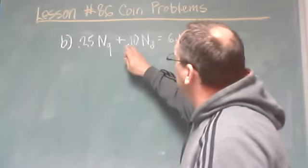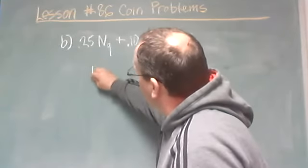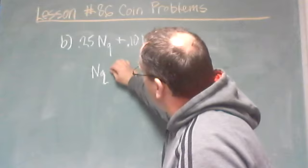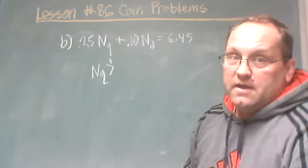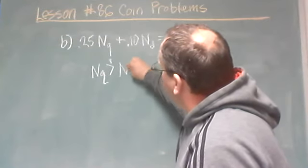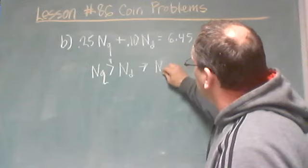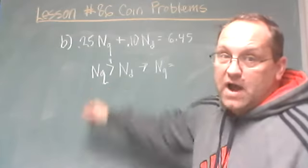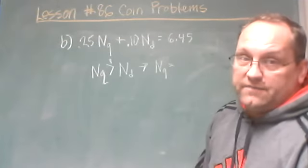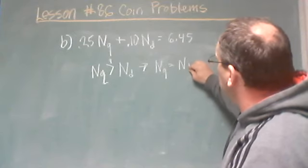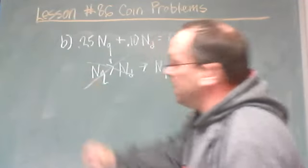The second equation: he has nine more quarters than dimes, so the number of quarters is greater than the number of dimes by nine. To change this to an equality, I can add nine to the dimes side, giving: the number of quarters equals the number of dimes plus nine. It's already set up for substitution — I can plug in this expression for the number of quarters in the value equation.